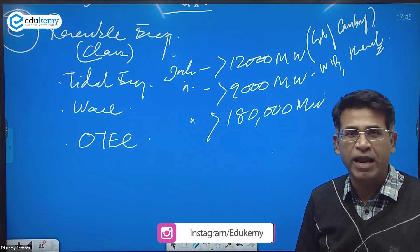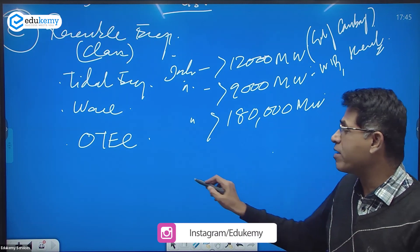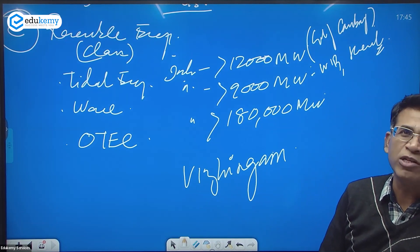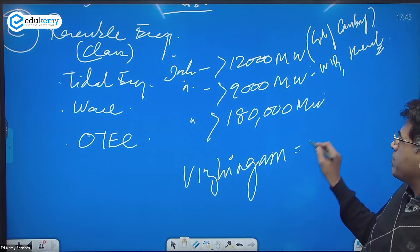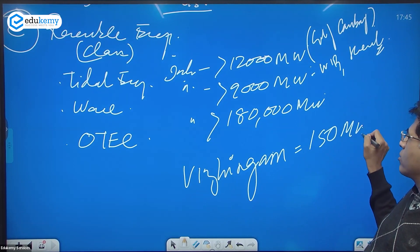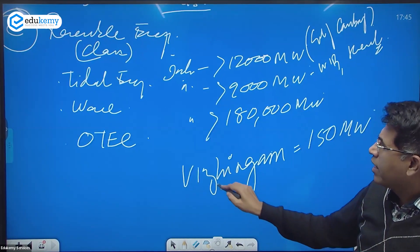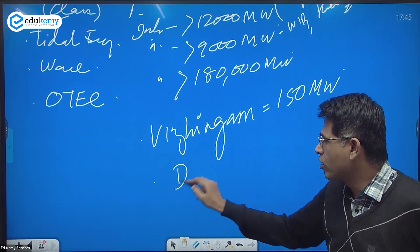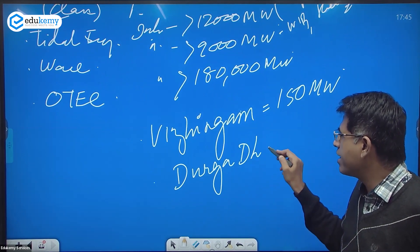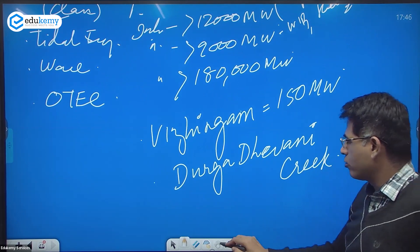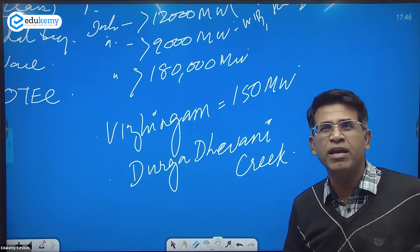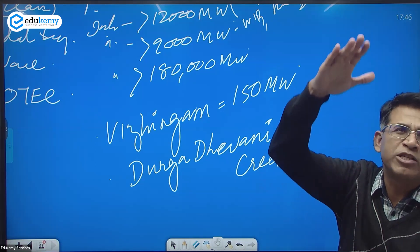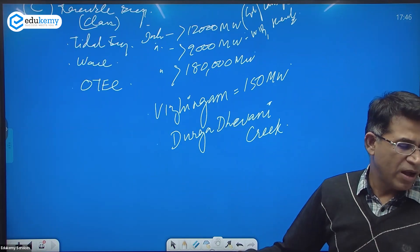Wave energy is in Kerala coast and West Bengal coast. In Kerala coast we have Visingham, one of the first experimental plants of 150 megawatt. Along the West Bengal coast we have Durga Dhwani creek. OTEC is ocean thermal energy conversion, energy from the difference of temperature in the ocean layers.